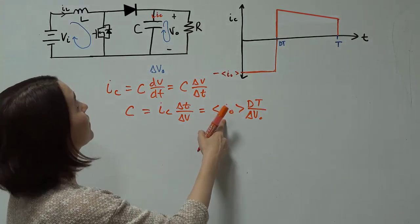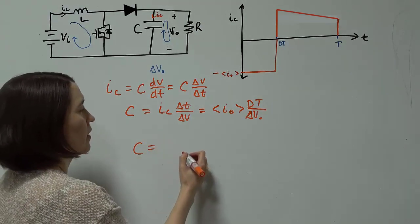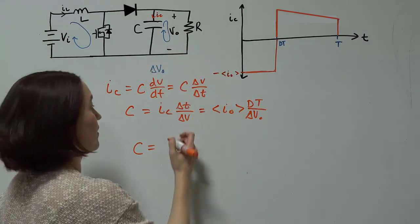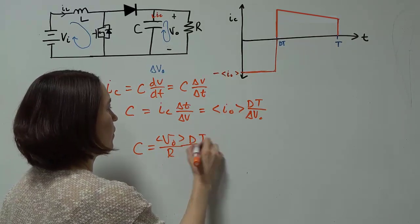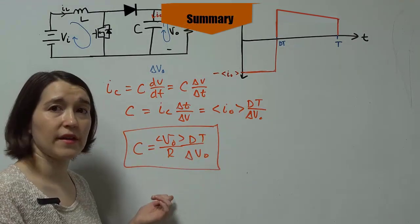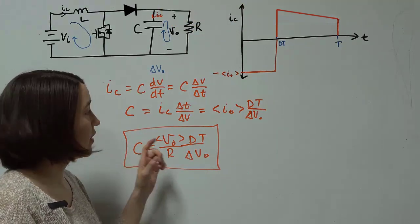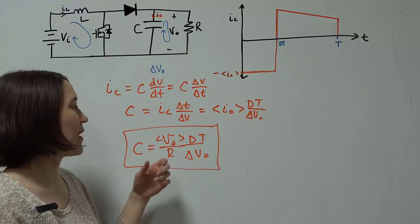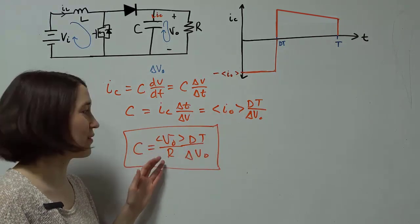If you want to be more specific to this resistor, we can simply put that value in. We can also write it as this value instead of IO. We can write it as V out, average V out over R, and then DT over delta V out. So this is the equation that you can use to determine the capacitor value that you want for a given change in the output, the voltage ripple.